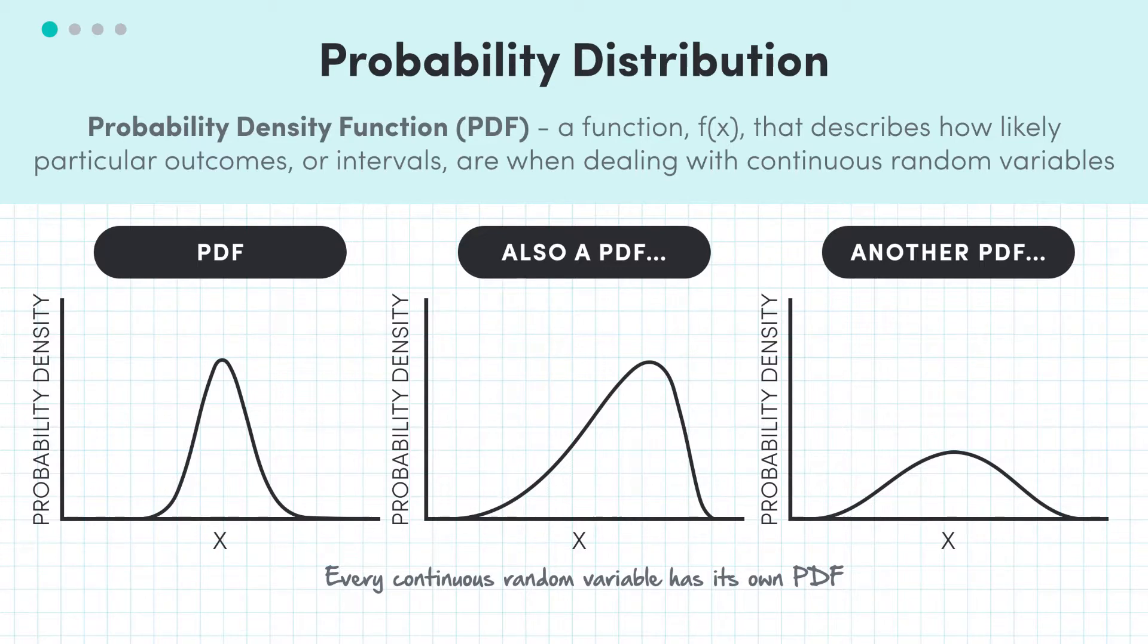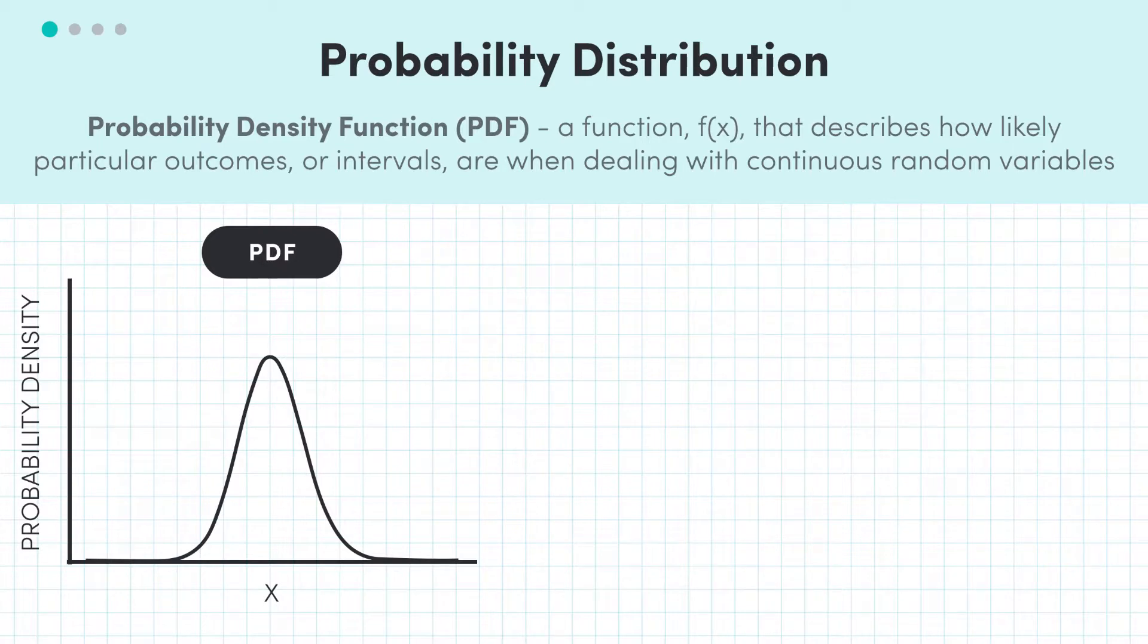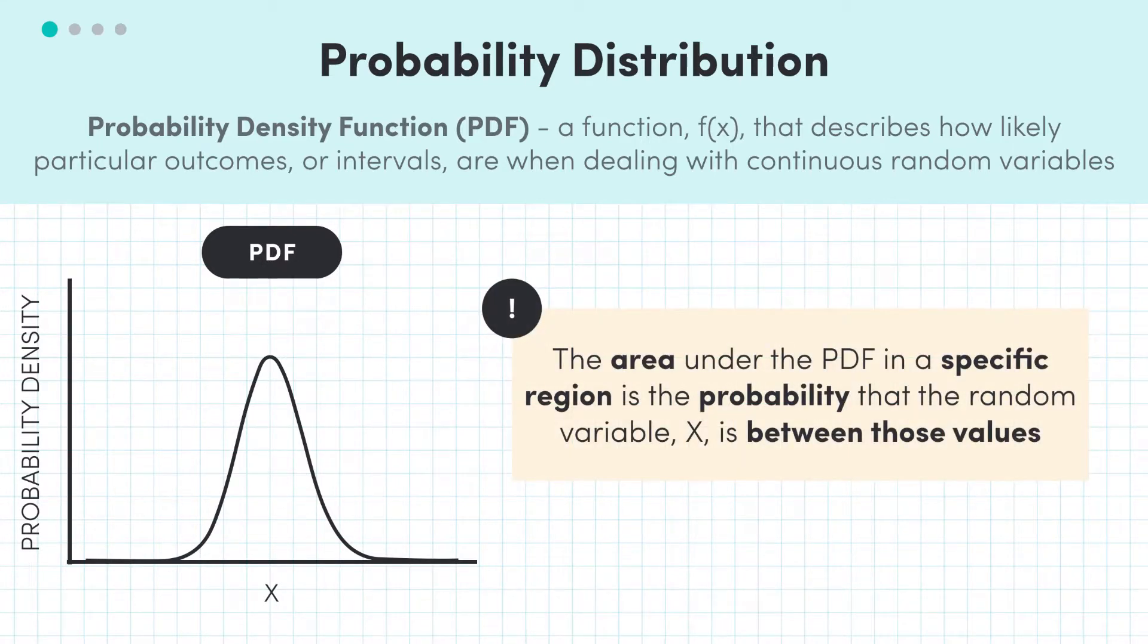Okay, cool. So how do we relate this back to probability? Well, like I've hinted at already, the area under the PDF in a specific region is the probability that our random variable X is between those variables.